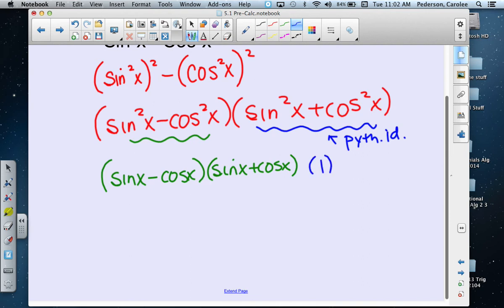So our final answer in factored form is (sinx - cosx)(sinx + cosx). If you wanted to take the time to FOIL that back out, you'd be left back with that original expression.